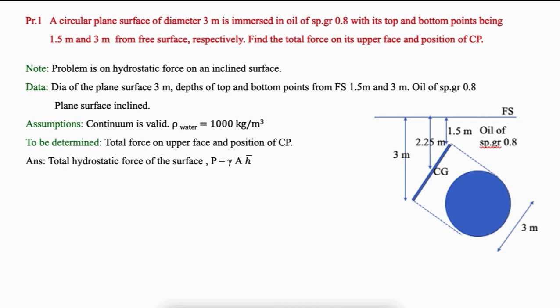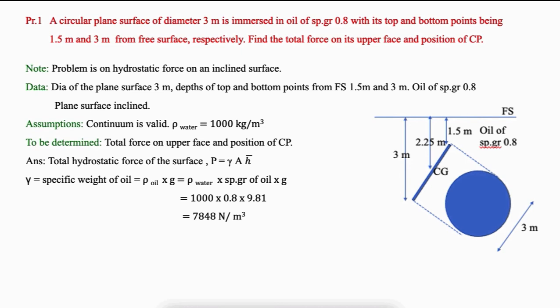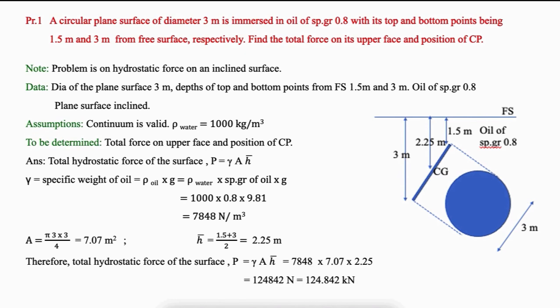Total hydrostatic force: P equals gamma A H-bar. Gamma of oil equals rho of water times specific gravity of oil times g, which comes to 7,848 N/m³. Area of the plane surface equals 7.07 m². H-bar equals 2.25 meters — that is the average of the top distance 1.5 m and bottom distance 3 m. Therefore the total hydrostatic force comes to 124.842 kN.